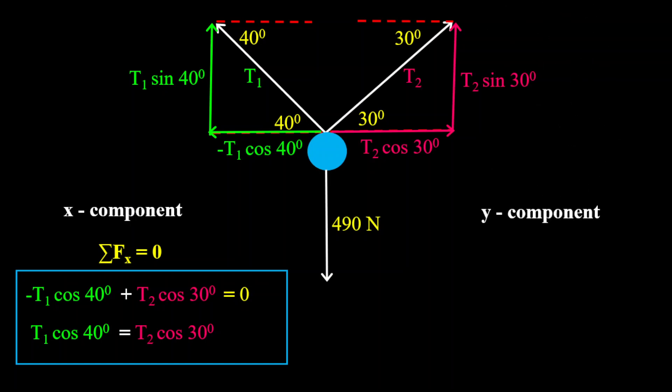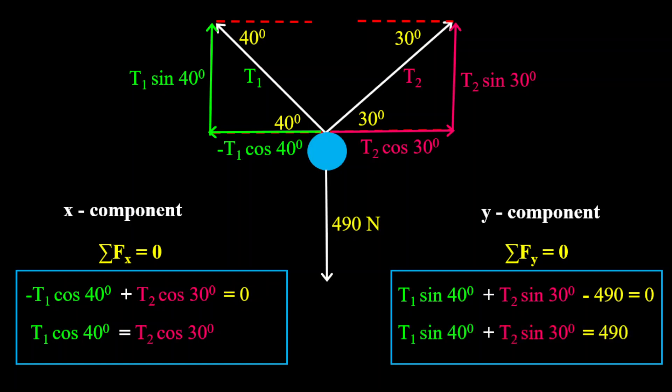Now let's jump into the sum of the y components. For the y component section, the sum is also equal to 0 because the body is in equilibrium. Notice that we have T1 and T2 going upwards in terms of the y components and then the 490 newtons, which is the weight of the object, is acting downwards. Therefore the total force in the y component will be T1 sin 40 degrees plus T2 sin 30 degrees minus the 490 newtons. From this we can have T1 sin 40 degrees plus T2 sin 30 degrees equals to 490.